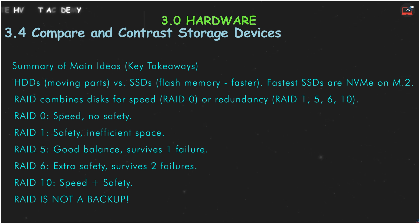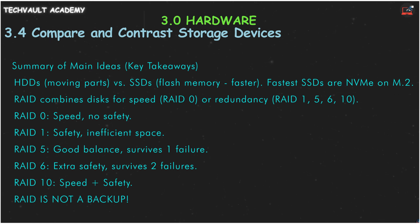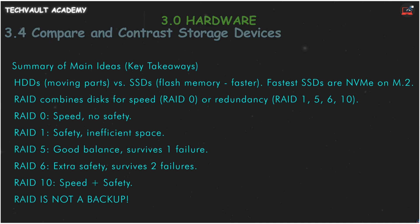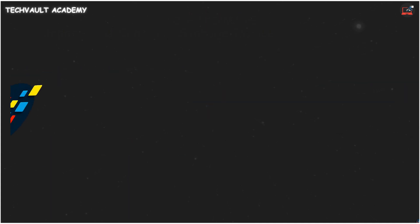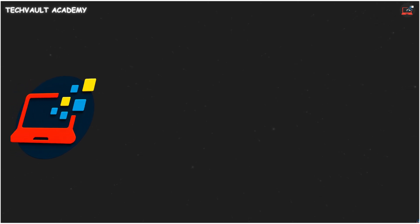RAID 1 is for redundancy via mirroring. RAID 5 can survive one drive failure. RAID 6 can survive two. And RAID 10 combines the speed of striping with the safety of mirroring. And most importantly, RAID is not a backup. That's our rapid review of storage devices. Thanks for joining us at Tech Vault Academy.